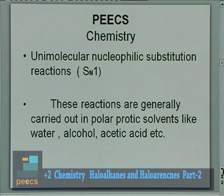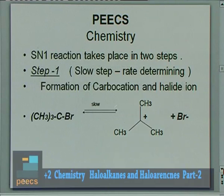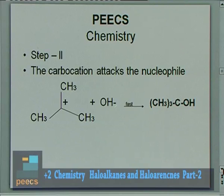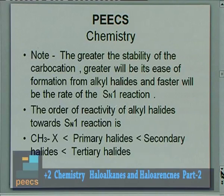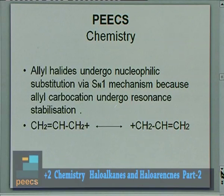SN1 reactions are generally carried out in polar protic solvents like water, alcohol, or acetic acid. Tertiary butyl halide undergoes nucleophilic substitution by SN1 mechanism. The rate law is Rate = k[RX]. Greater the stability of the carbocation, greater is the ease of its formation from the alkyl halide and faster is the rate of SN1 reaction. The order of reactivity for SN1 is just opposite to that of SN2.